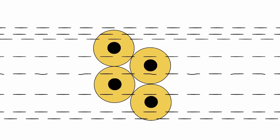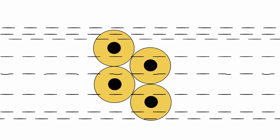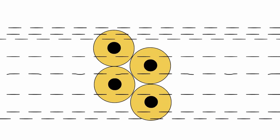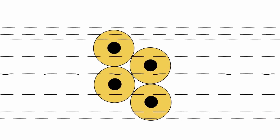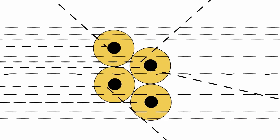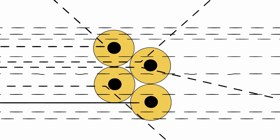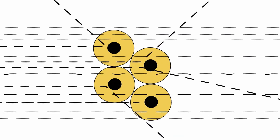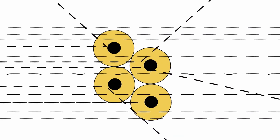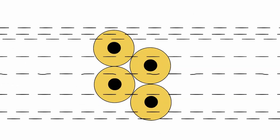This explains why the vast majority of alpha particles pass through the foil unscathed. It's important to note that alpha particles are positively charged, and they deflect only when encountering other positively charged particles at the atom center. The repulsion between positive charges is the key factor at play here.